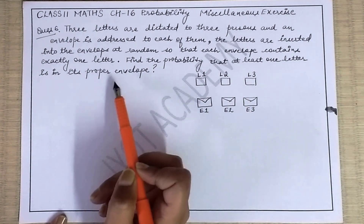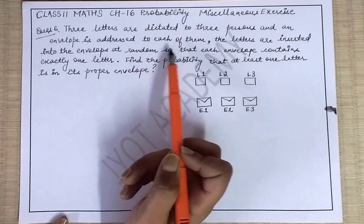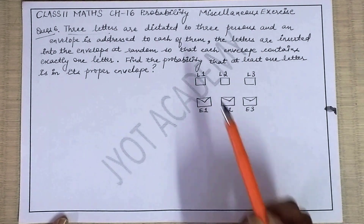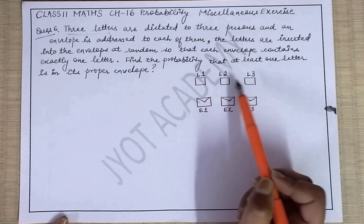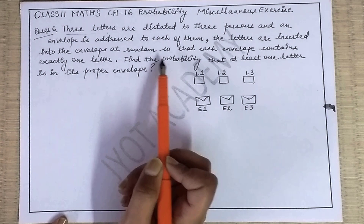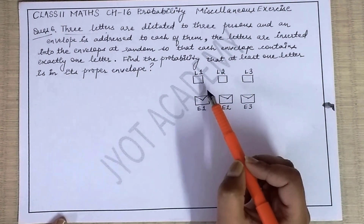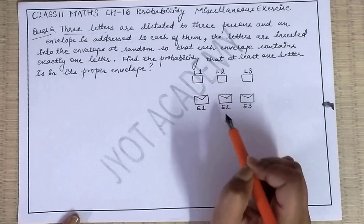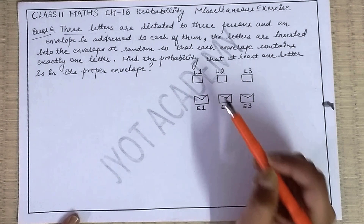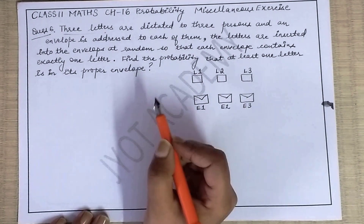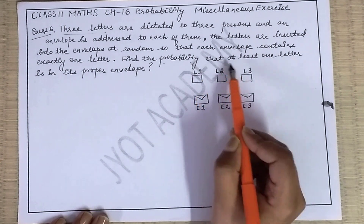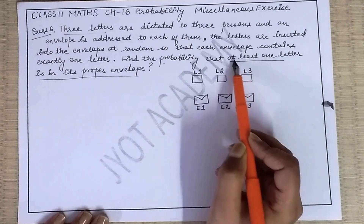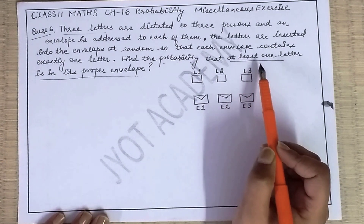Find the probability that at least one letter is in its proper envelope. We have three letters and three envelopes - envelope 1, envelope 2, envelope 3 - and three letters: letter 1, letter 2, letter 3. The letters are inserted at random so that each envelope contains exactly one letter. We need to find the probability that at least one letter is in its proper envelope.